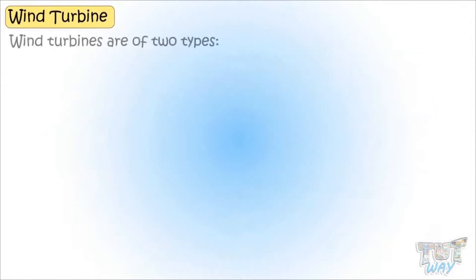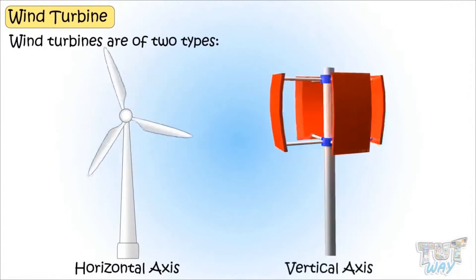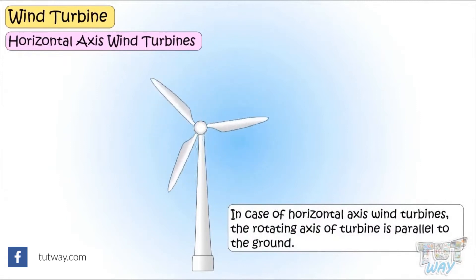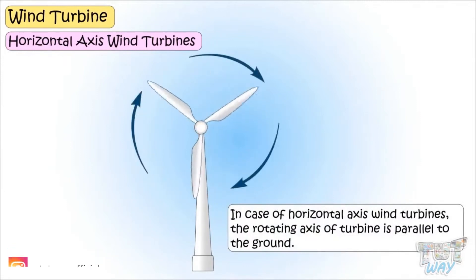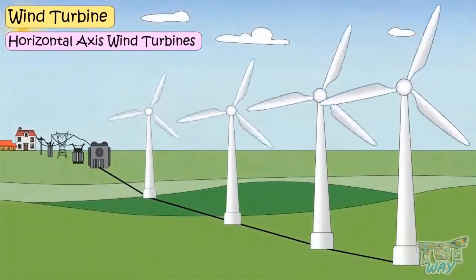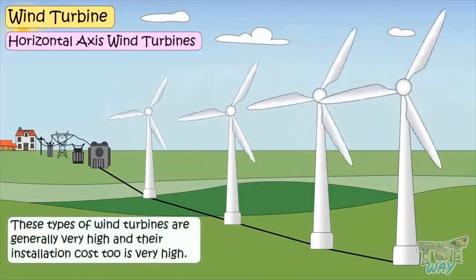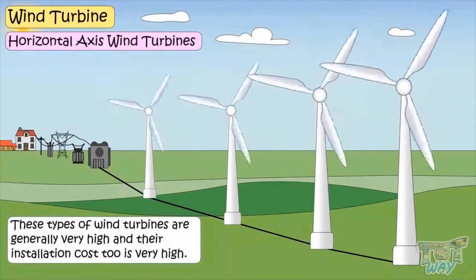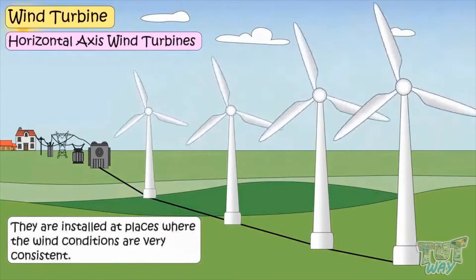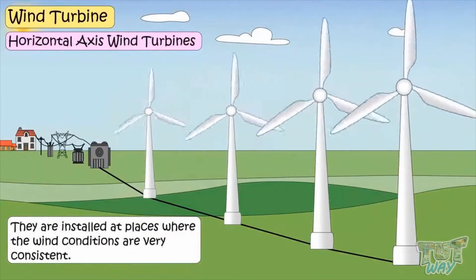Wind turbines are mainly of two types. They can be horizontal axes and vertical axes. Horizontal axes wind turbines are more common. In case of horizontal axes wind turbines, the rotating axes of the turbine is parallel to the ground and they are mainly used in commercial big purpose projects, producing electricity at a large scale. This type of wind turbines are generally very high and their installation cost too is very high. They are installed at places where the wind conditions are very consistent.